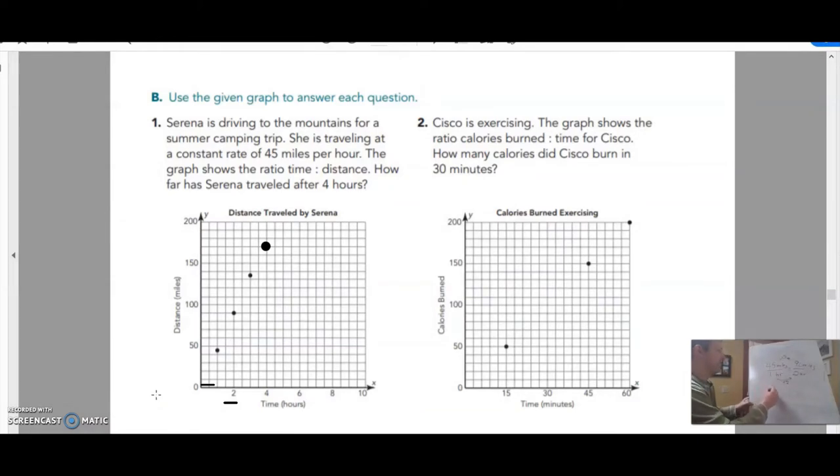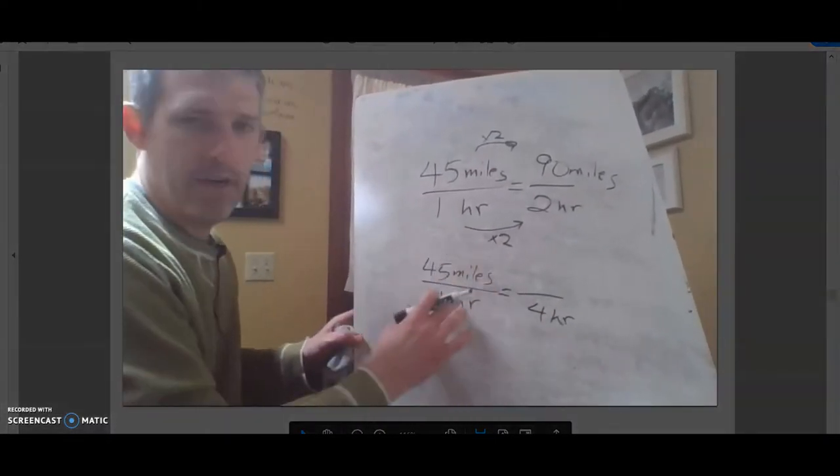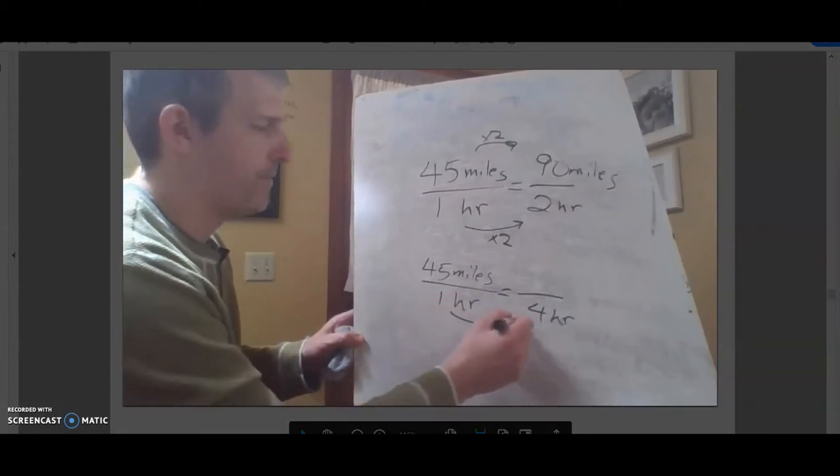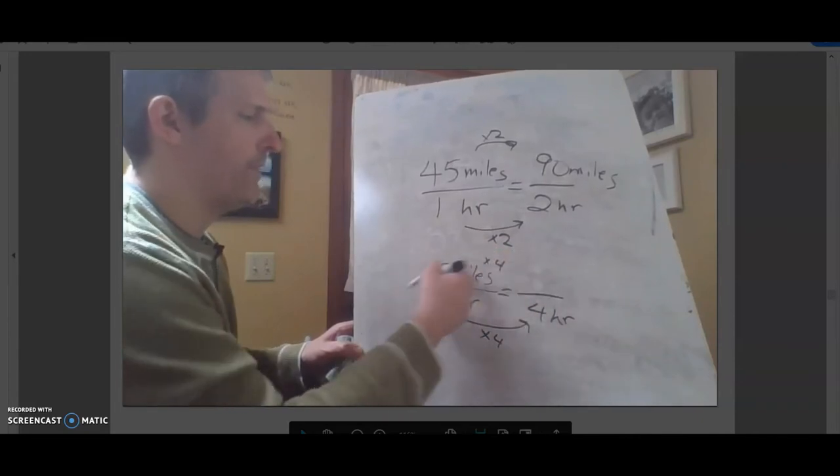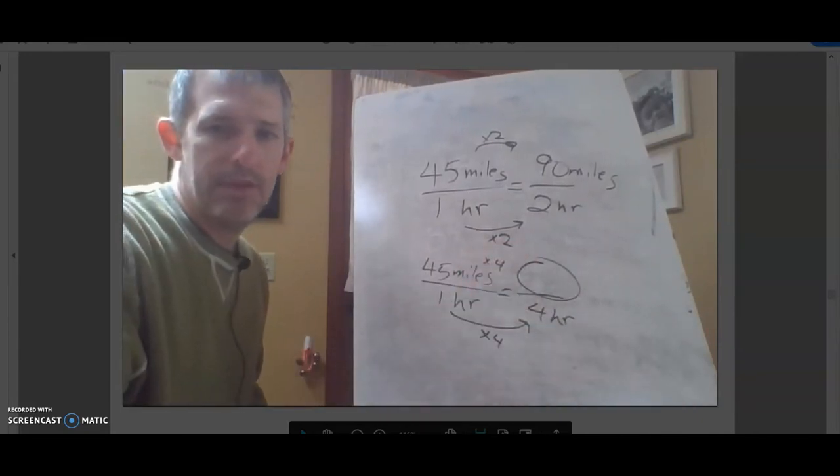So if I set that up again, 45 miles over one hour, and I want to ask, well, how far in four hours? So 45 miles in one hour, how far did she go in four hours? So how do I get from one to four? I'll multiply it times four. So 45 times four is going to be my answer right here.